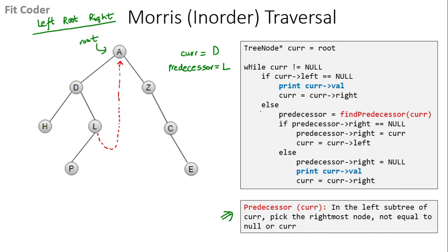In the next iteration, current is D. We check the left of D, which is H — not null. We come in the else part and find the predecessor for D. Going into the left subtree, H is the rightmost node, so predecessor is H. The right of H is null, so we create a virtual link from H to D. Then current will point to the left of D, which is H.